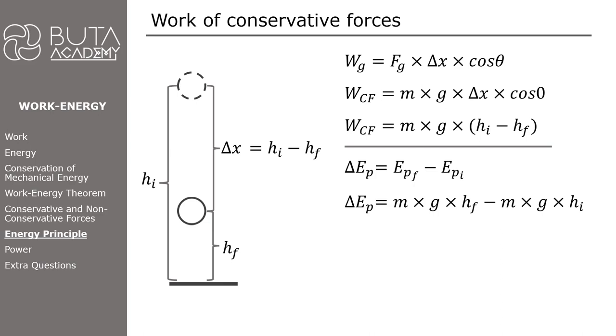We can restructure the equation as both expressions contain mass and gravitational acceleration. By comparing two equations, we can say that the work done by conservative forces is equal to negative of change in the potential energy of an object. In this example, we did it just for the force of gravity, but it is true for all kinds of potential energies.